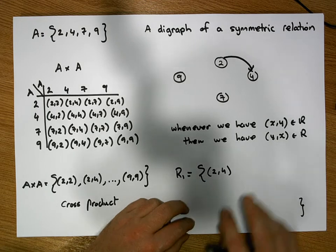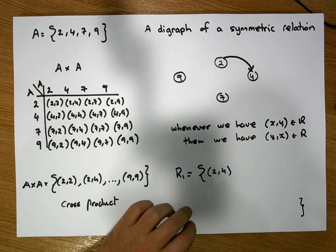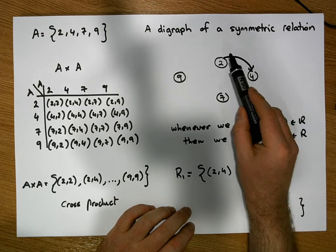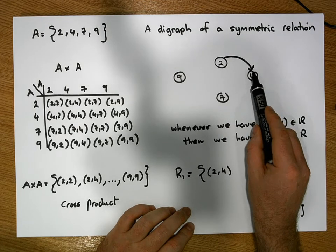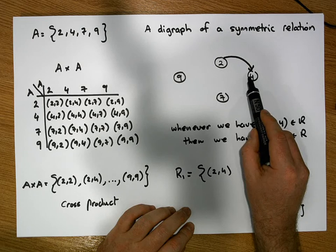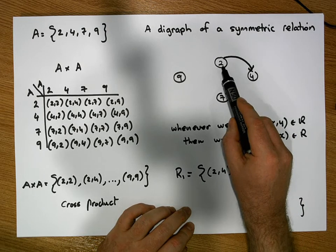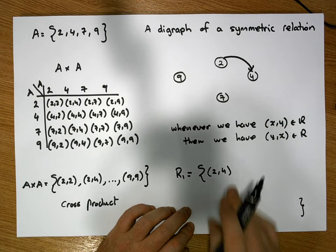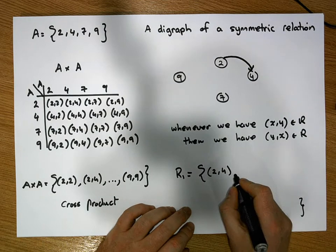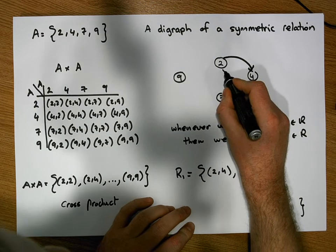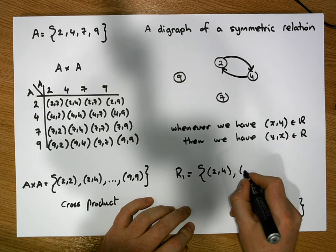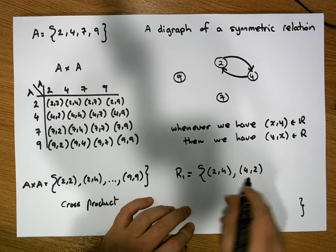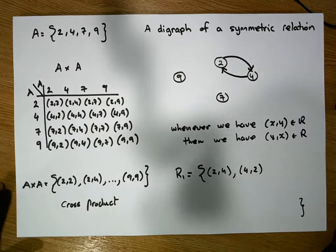So in this situation, if this was a relation, this relation would not be symmetric because we don't have the ordered pair (4,2) in here. From a graph perspective, what it really means is that whenever you can take a hop from one node to another node, there should also be a hop back from the node where you arrived at to the source node. So if I want to make this relation symmetric, I need to put a loop from 4 back to 2. At this stage now, this relation is symmetric.